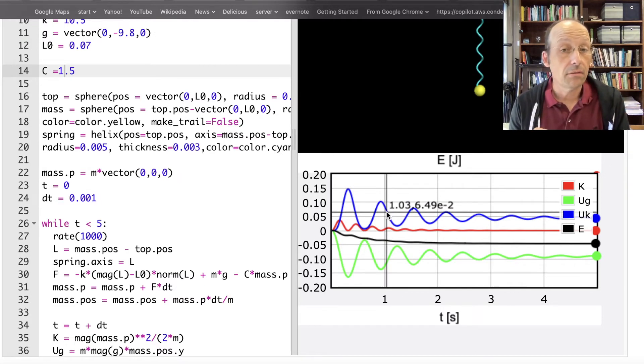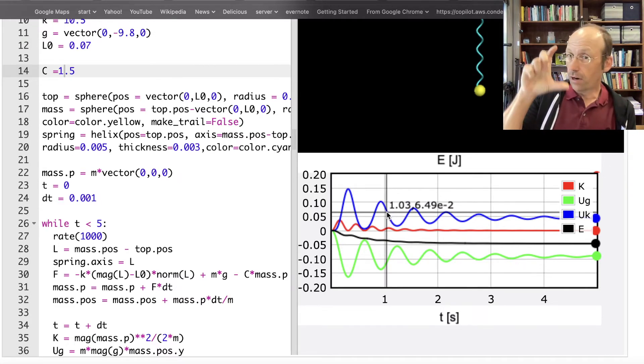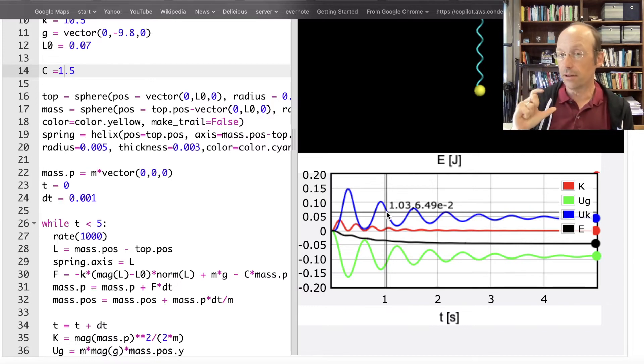Okay. Now the energy is not zero. Right. Because there's there's gravitational potential energy and there's energy in the spring. It's still stretched. But there you go.